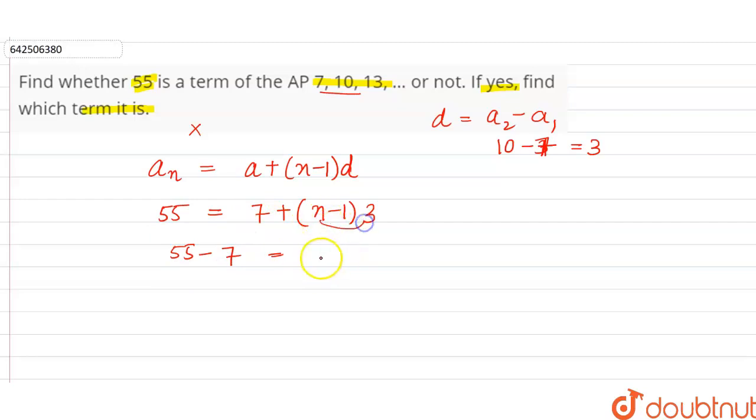So this equals 3n minus 3. 55 minus 7 equals 3n minus 3. 55 minus 7 plus 3 equals 3n. 55 minus 4 equals 3n, so 51 equals 3n.